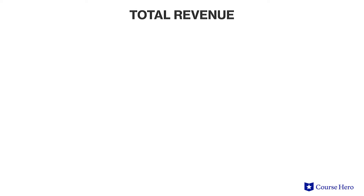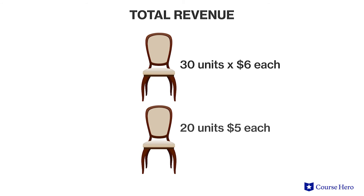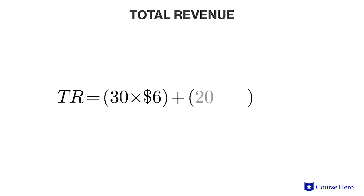Instead of selling 50 units at the same price, the company may want to sell 30 units at $6 each and the other 20 units at a discounted price of $5 each. The total revenue would be equal to 30 units times $6 plus 20 units times $5, for a grand total of $280.